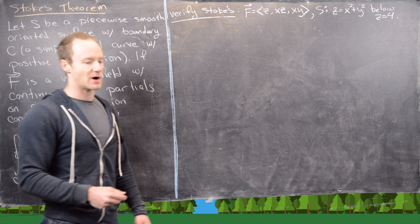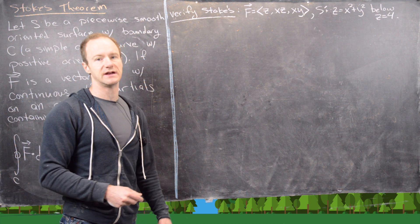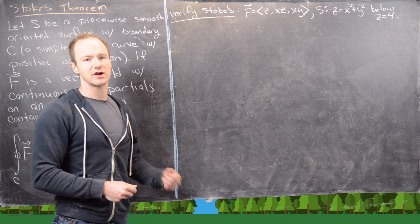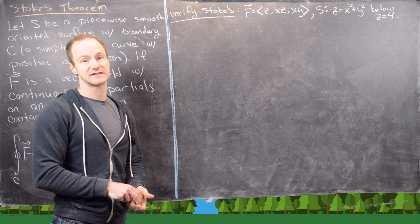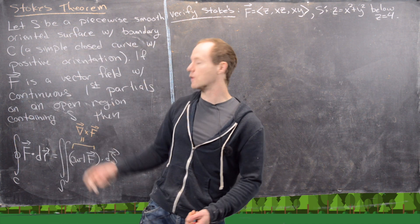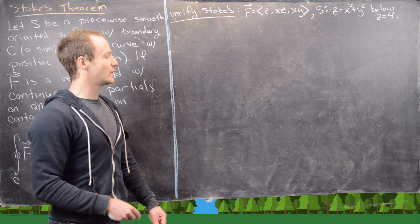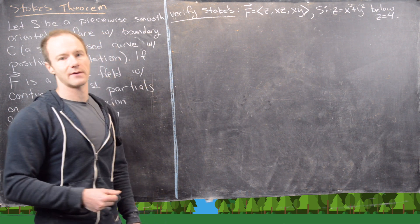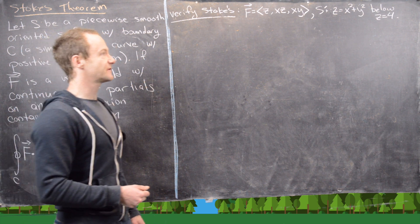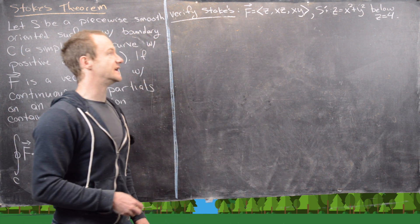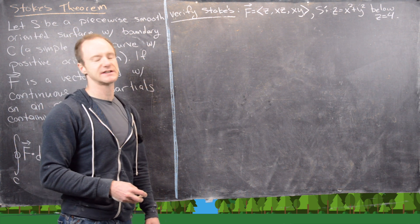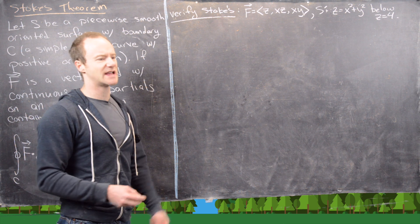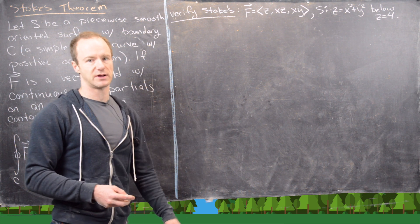This might seem like a bummer because Stokes' Theorem gives us the ability to calculate just one or the other, but in fact this makes it a really good exercise for brushing up on the skills of calculating both. The example we want to look at has vector field F equal to (Z, X, Z, X, Y), and our surface is the paraboloid Z equals X squared plus Y squared, below the plane Z equals 4.